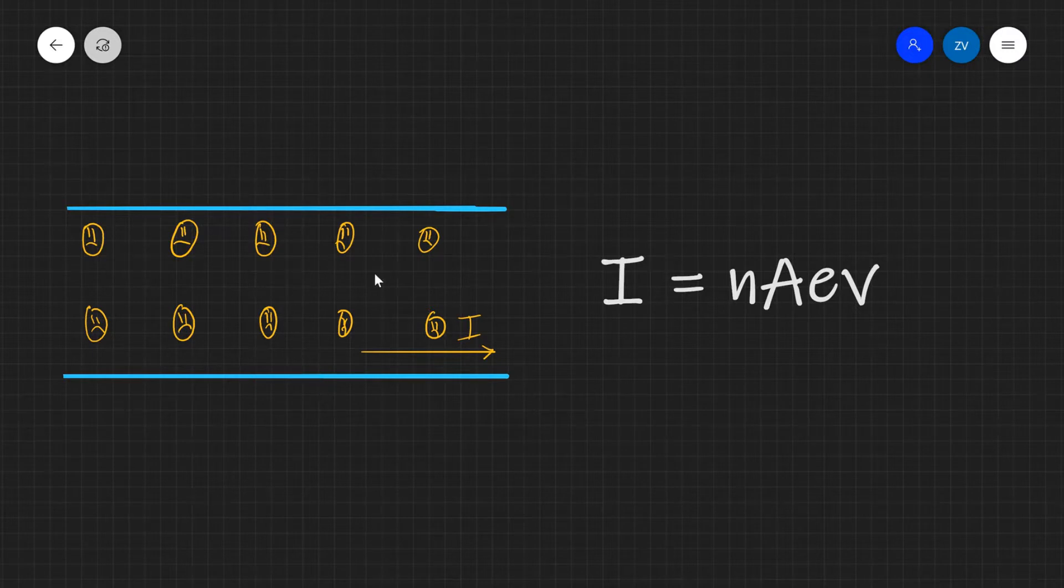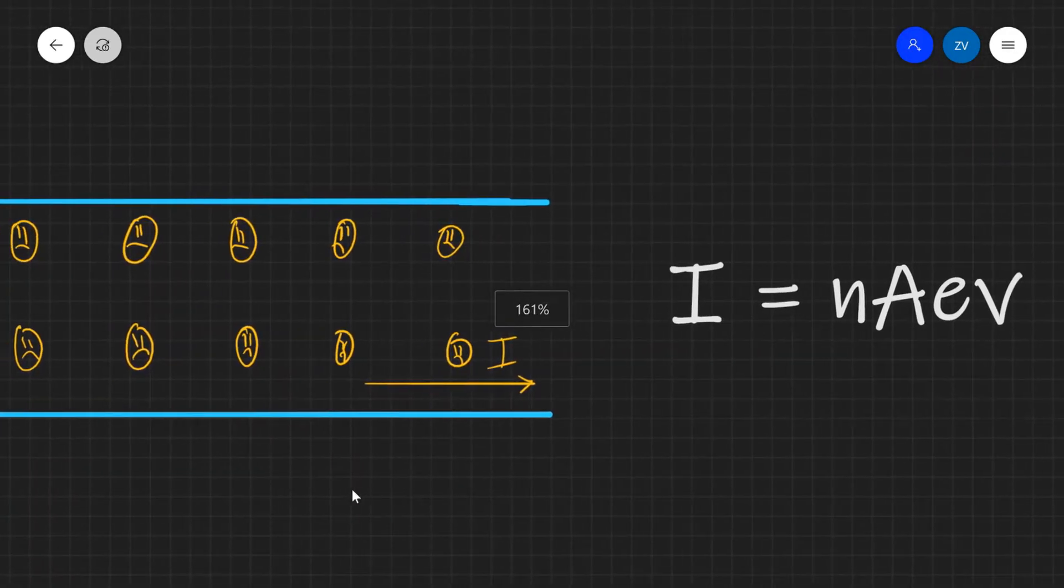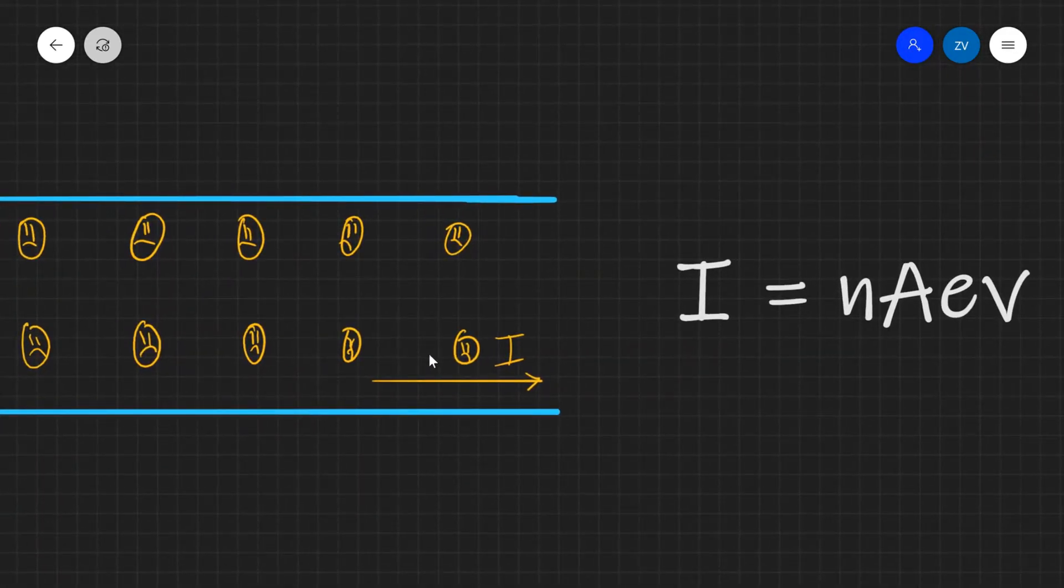Now in order to explain this we're going to be looking at an equation which is colloquially known as the NAVE equation and we can see why that is the case. Now just before we do that though let's imagine a current carrying wire. So you can see my artistic impression of a current carrying wire here on the left hand side.